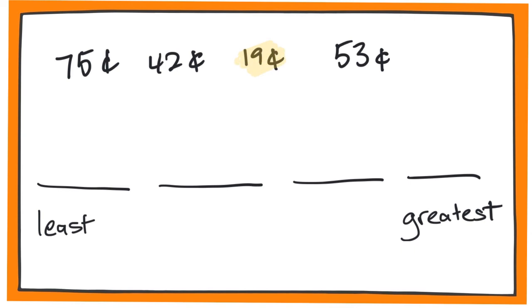And we know that because when we're counting, we count to 19 before any of the other numbers. The next smallest number is 42 cents, so we'll put that right there next to the 19 cents. Now we want to find the third smallest number, which is 53 cents. And finally, the greatest number out of the four is 75 cents.